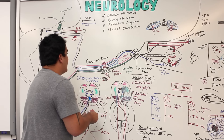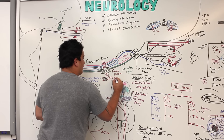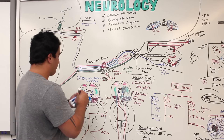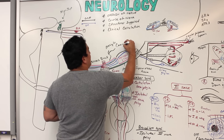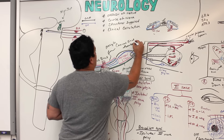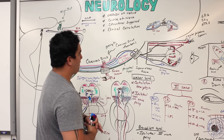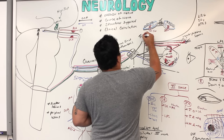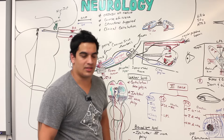Within the cavernous sinus, an internal carotid artery aneurysm can compress CN3. Cavernous sinus thrombosis or infection (such as from meningitis or spread from paranasal sinuses) can also damage the nerve. Trauma — such as a fracture of the orbit or superior orbital fissure — can compress the nerve as well.